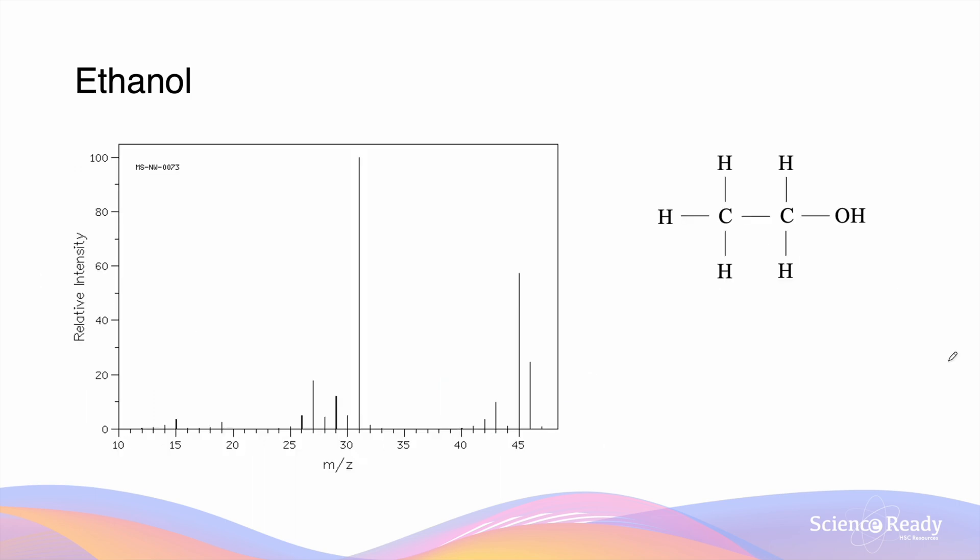We can also have a look at the compound ethanol. Ethanol has a base peak at 31, which corresponds with the formation of the C2OH fragment. This fragment has a molecular mass of 31, which is consistent with the mass spectrum, and is formed from the cleavage of the C-C bond that exists in the middle of the ethanol.